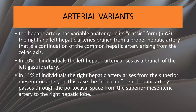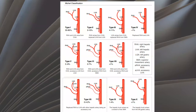Vascular variants. The hepatic artery has variable anatomy. In its classic form, about 55% of the time the right hepatic artery arises after branching from the lobar hepatic artery, which is a continuation of the common hepatic artery arising from the celiac axis. In about 10% of individuals, the left hepatic artery arises from a branch of the left gastric artery, and in about 11% of individuals, the right hepatic artery arises from the superior mesenteric artery. This is the Michels classification of the arterial system of the liver.